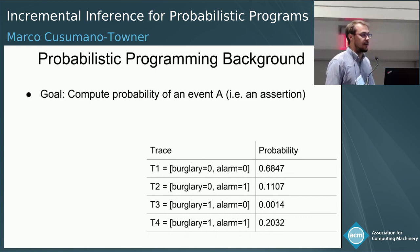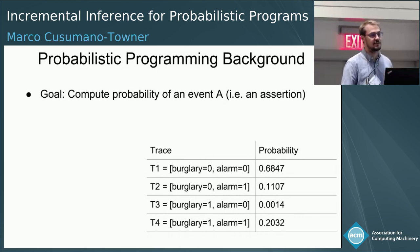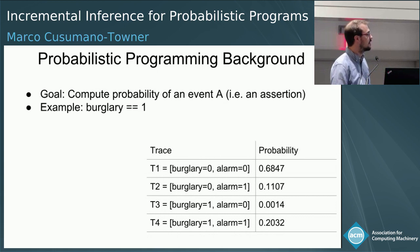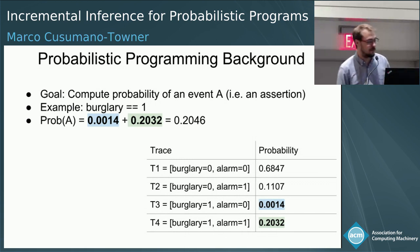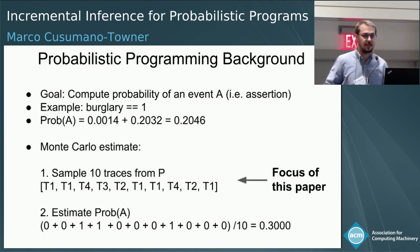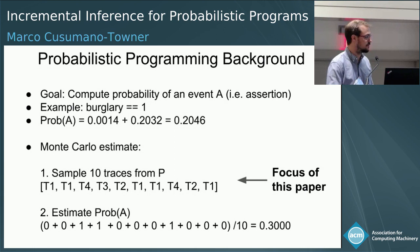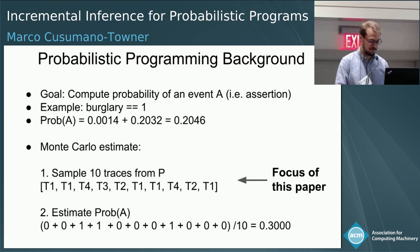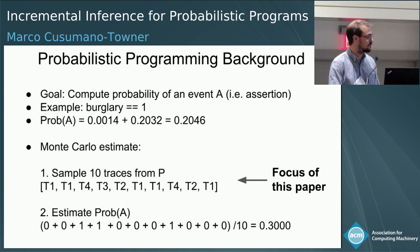One thing we might want to do with a probabilistic program is compute the probability of some event A occurring — for example, what's the probability that burglary is 1? We could enumerate over all traces where the event is true and sum their probabilities, but there are typically too many traces to enumerate. So we focus on sampling-based approaches, where we sample some number of traces from the program's distribution and form an estimate of the probability that the event is true.